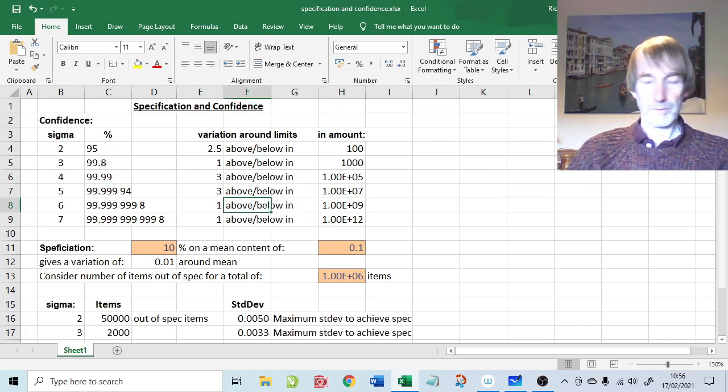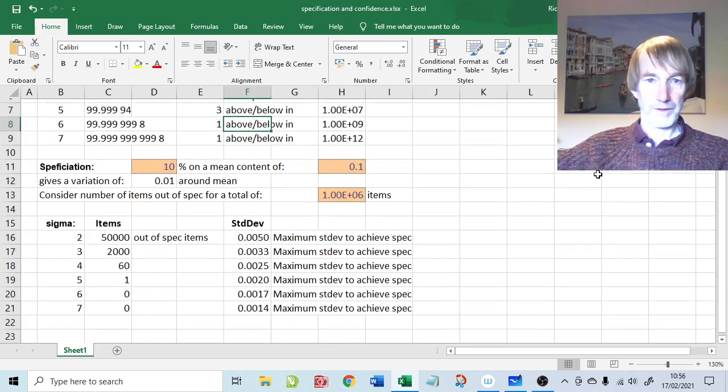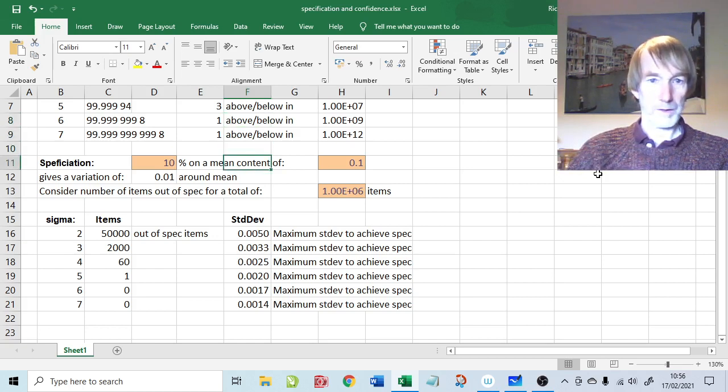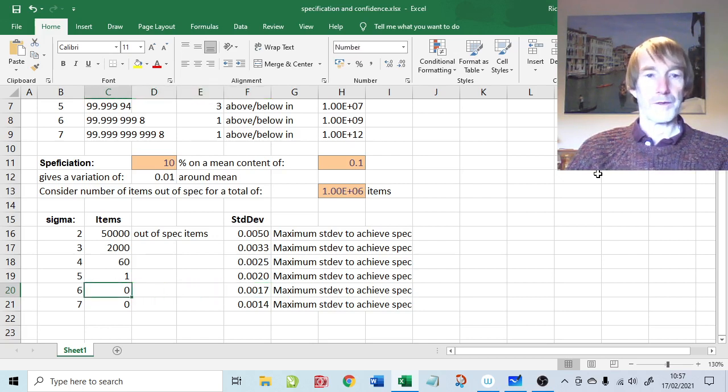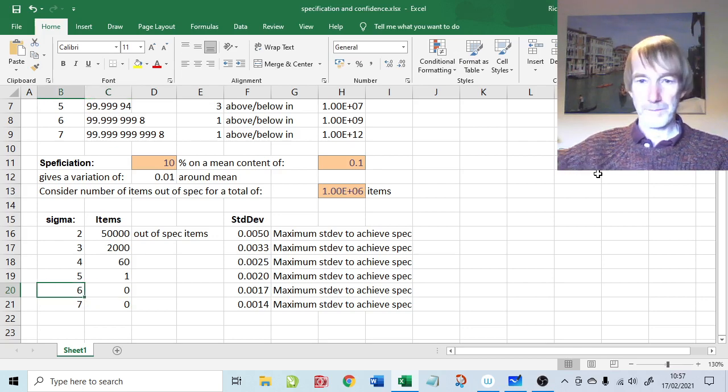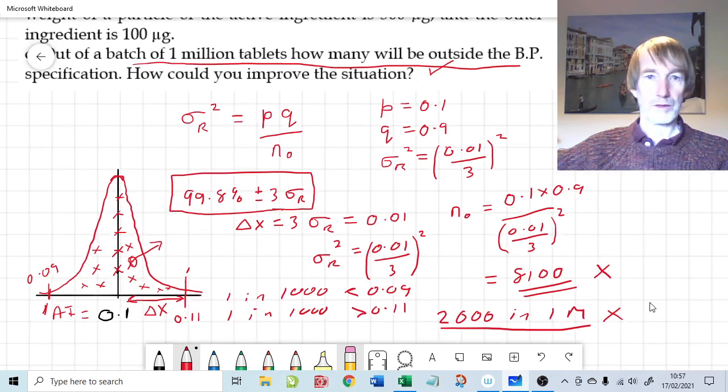We should be possibly looking at the 6 sigma level, because that now is one particle below the bottom limit, one particle above the top limit. That's 2 particles out of 100 million. In order to try and minimize the potential to overdose somebody, I think we're looking at 6 sigma. If we go to the 6 sigma level, then the number of items out of spec for 3 sigma was 2,000 items, but if we go to 6 sigma, we've now diminished it to a really negligible, as in close to zero, items out of spec.